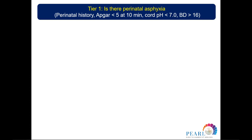We then go to the APGAR score at five and ten minutes. If the APGAR score is less than five, this can be related to asphyxia, but it is not specific — a wide range of reasons can cause a low APGAR score, including CNS malformation, infection, hemorrhage, or underlying metabolic disease. However, if we combine the low APGAR with profound asphyxia — cord pH less than seven and base deficit greater than 16 — then both together confirm that an asphyxia event occurred, answering the question of perinatal asphyxia.